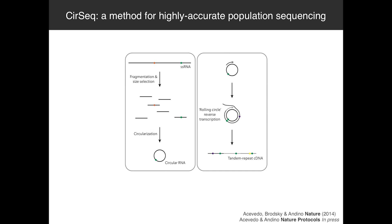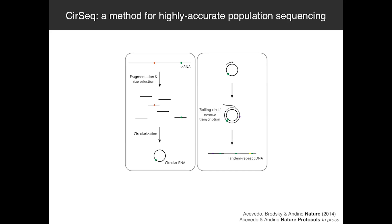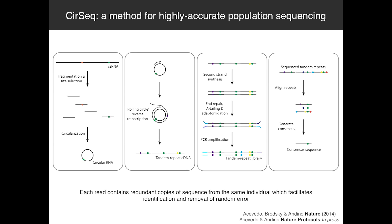Essentially how CirSeq works: we start with single-stranded purified virus RNA, break it into small pieces, and then take those pieces and circularize them. We use these circular templates for a rolling circle reverse transcription reaction, and the cDNA that results is actually a series of tandem repeats of that circular RNA. We take these cDNAs, clone them, and sequence them just like any other mRNA-seq library, except that when we get the data back, every read has multiple copies that derive from the same RNA template.